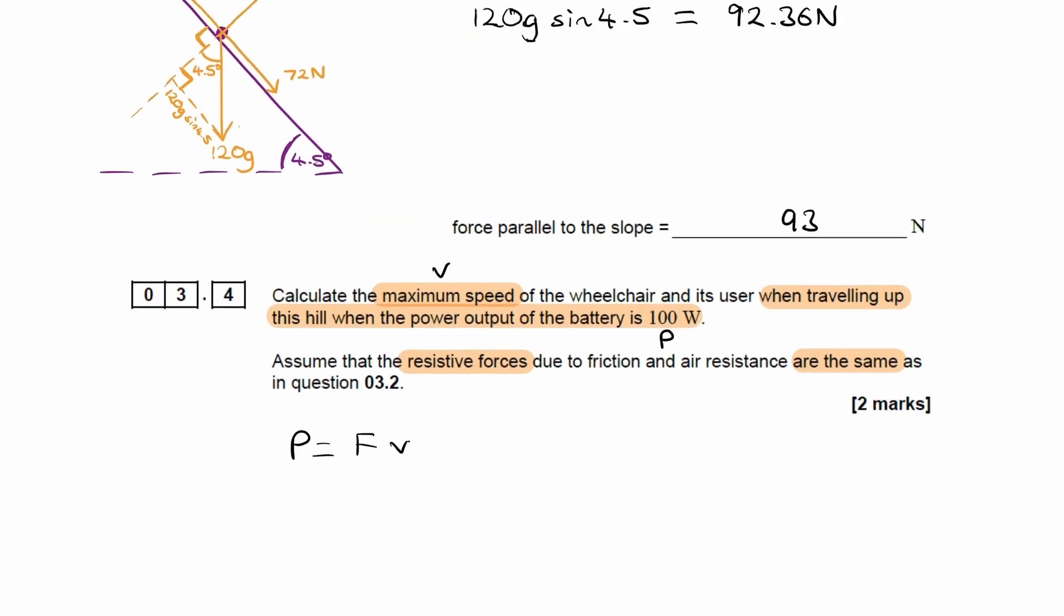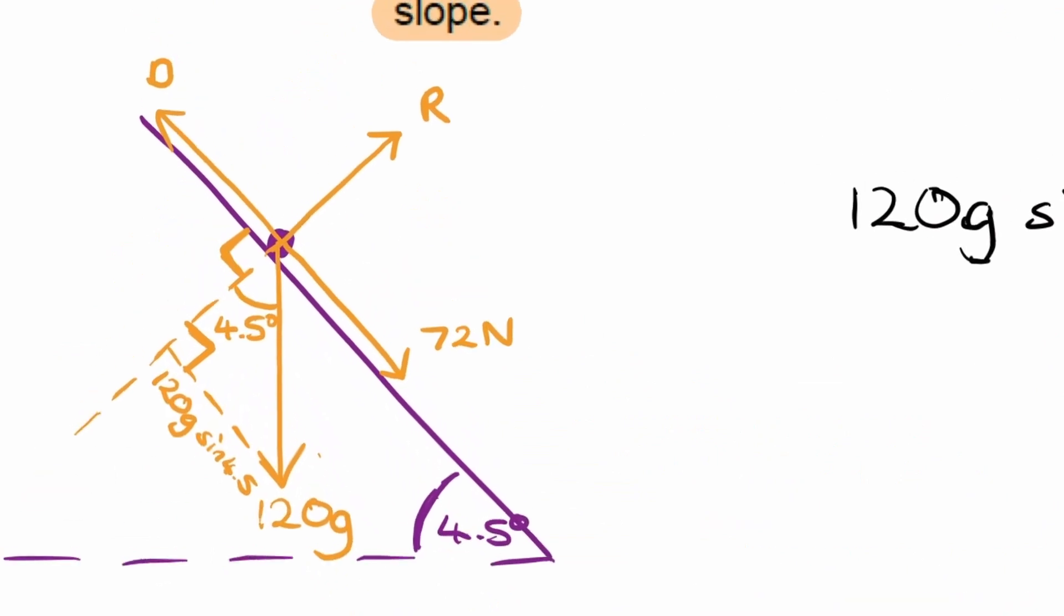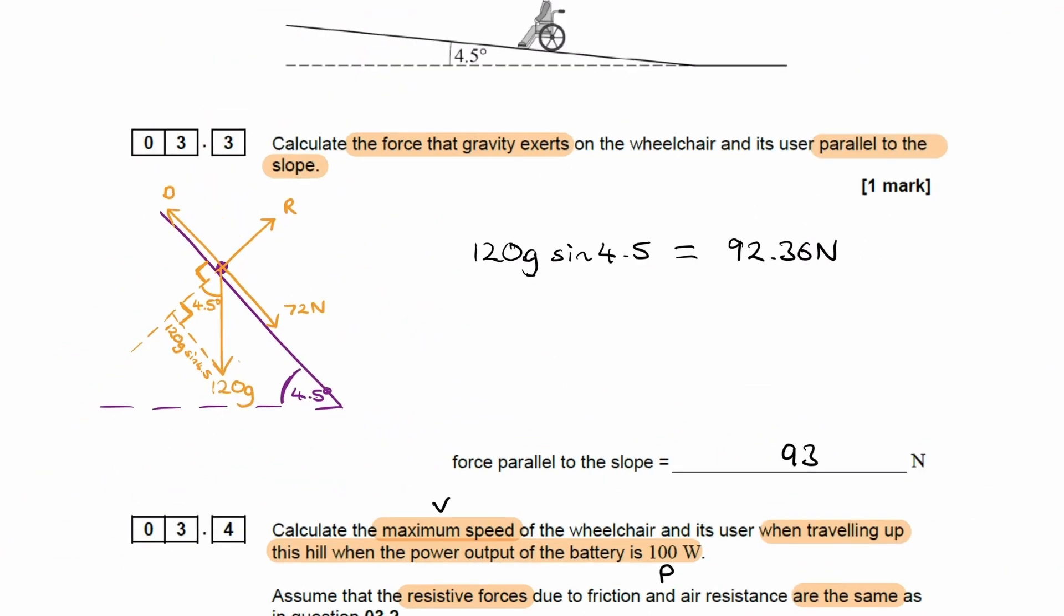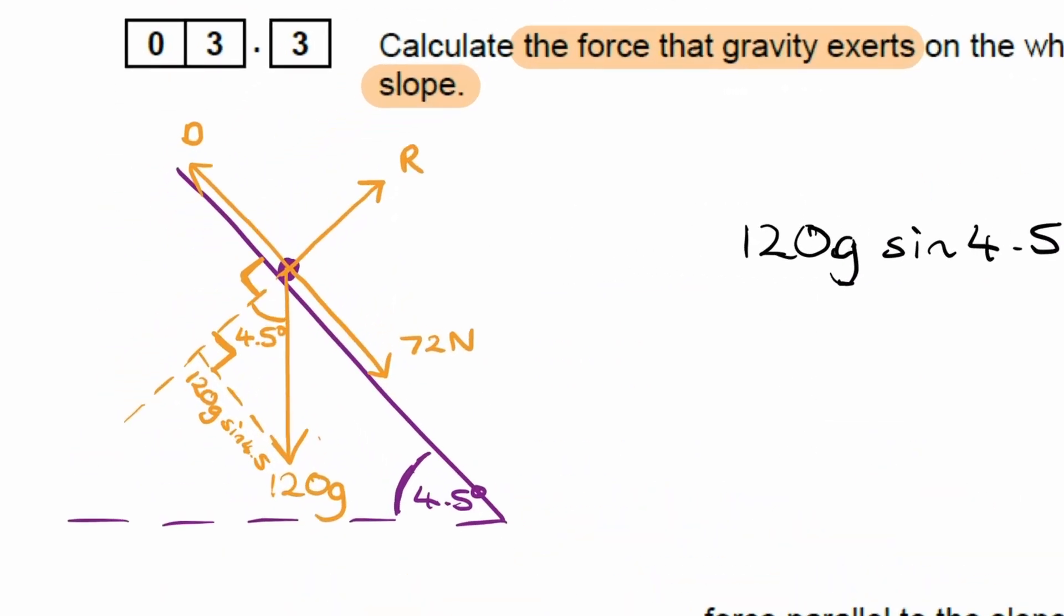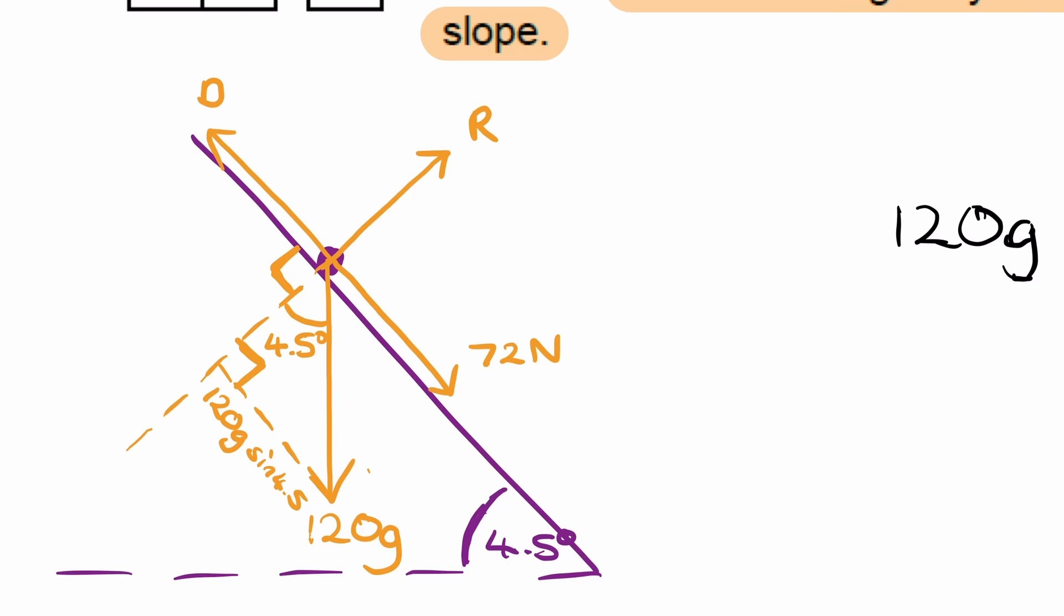Looking at our diagram, our driving force, because we know the object is traveling at a constant speed. The wheelchair would be going up this hill and holding this speed when the power output is 100 watts. It's a constant speed, therefore this object should be in equilibrium.